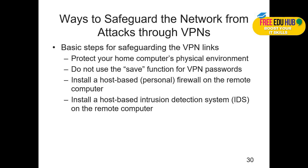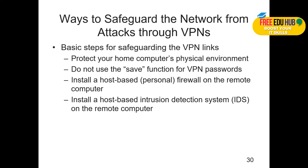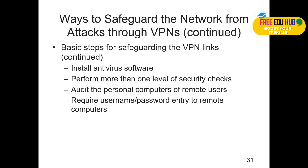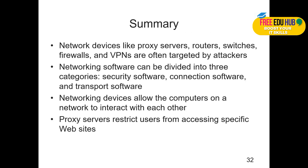Basic steps to safeguard a VPN include protecting the user's home computer's physical environment, not using the save function for the VPN password so users must enter it each time, installing a host-based personal firewall on the remote computer, and installing a host-based intrusion detection system. Organizations typically issue official laptops or computers with updated antivirus definitions and all basic security protocols. Additional steps include installing an antivirus program, performing more than one level of security checks, auditing personal computers, and requiring username and password for remote network access.